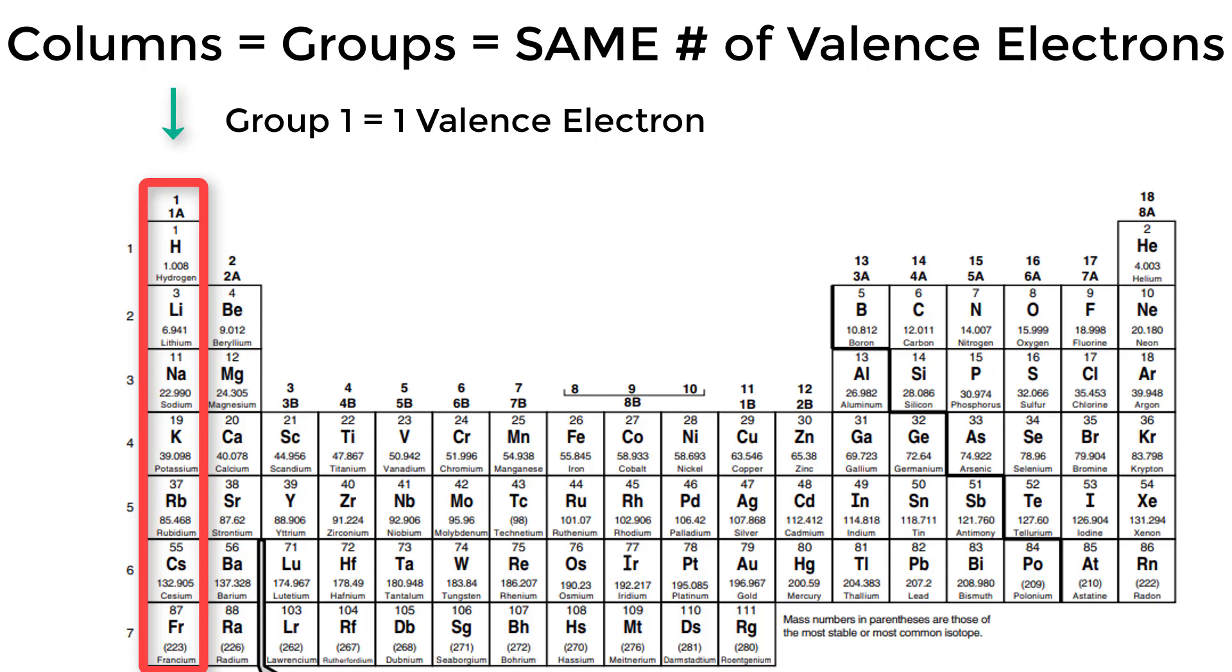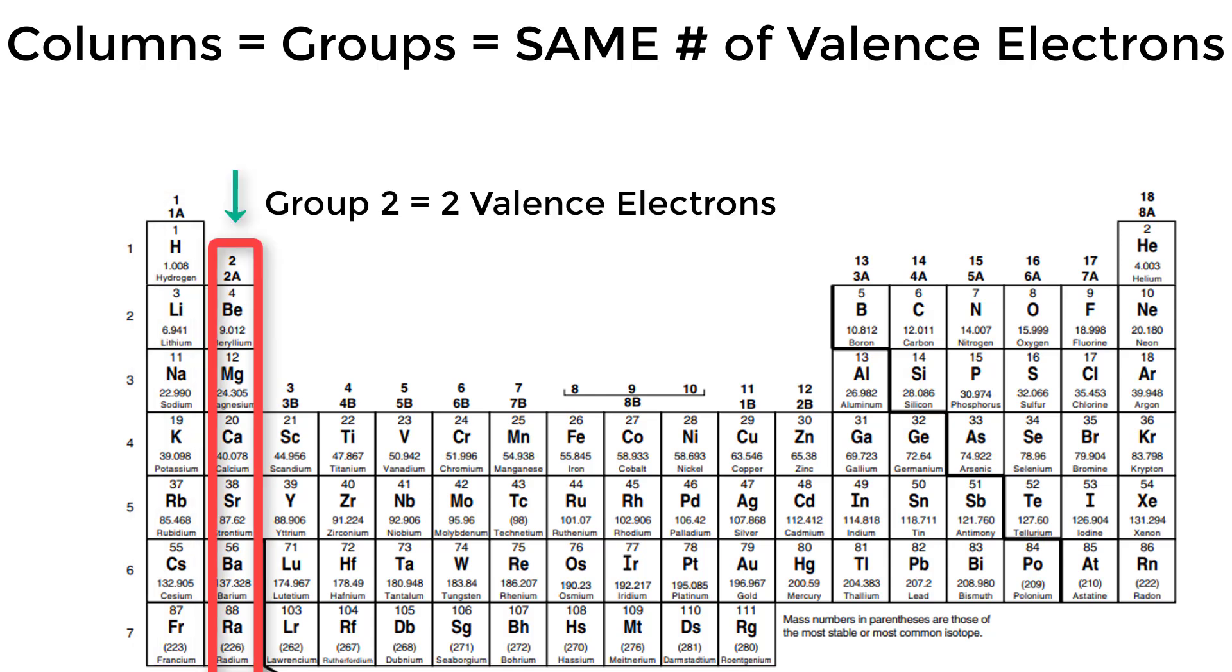Every element in the first column, or group one, has one valence electron in its outer shell. Every element in the second column, or group two, has two valence electrons in the outer shell.